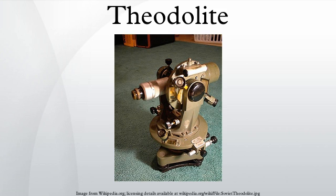Both axes of a theodolite are equipped with graduated circles that can be read through magnifying lenses. The vertical circle, which transits about the horizontal axis, should read 90 degrees when the sight axis is horizontal, or 270 degrees when the instrument is in its second position — that is, turned over, or plunged. Half of the difference between the two positions is called the index error.